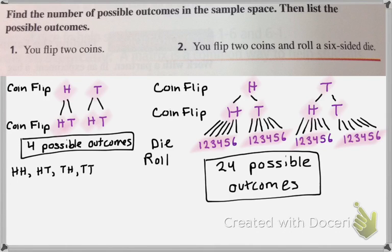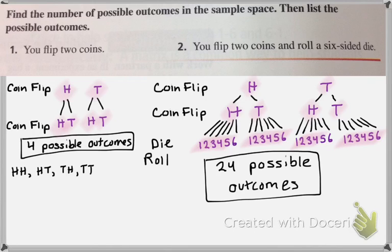All right, go ahead and check your work. For your coin flip, if you flip heads, you then could flip heads or tails. And if you flip tails first, you then could flip heads or tails. So there are four possible outcomes. For number two, there are 24 possible outcomes: six if you flip double heads, six if you flip heads then tails, six if you flip tails then heads, and six if you flip double tails.